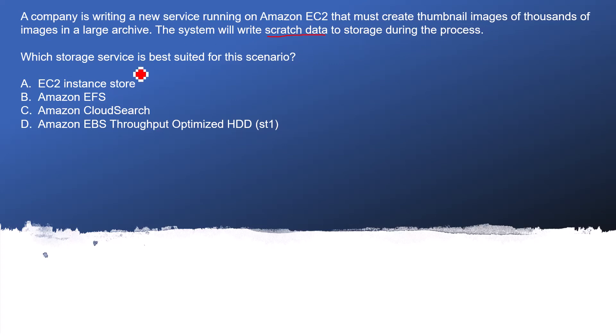Option A is EC2 Instance Store. Instance Store is basically a temporary store — if you terminate your instance, the data will be gone from your storage. Also, the instance store size is very limited and it's not useful if you are processing a large number of images. So this option is not correct.